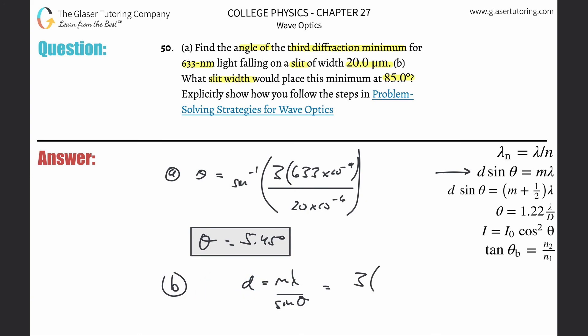It's still the third diffraction, so that's still three. This is still 633 nanometers, so multiply that by 10 to the minus nine. That's still the wavelength. Then divide that by sine of 85 degrees.